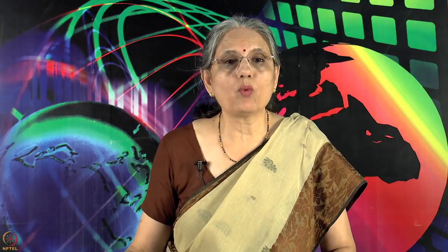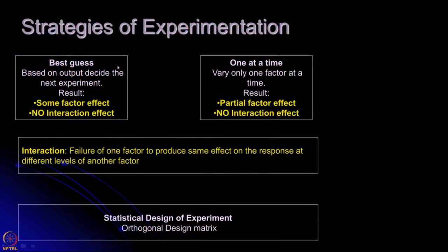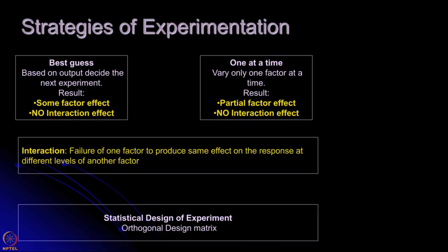So when such a situation arises — when your experiment is generally of this nature — you can apply what is called design of experiment. Design of experiment is a kind of strategy of experimentation. Let us look at different strategies. The one most commonly used is called best guess: based on a specific output you decide what should be your next experiment, with no plan for which experiment comes after the first, and no idea how many experiments you are going to conduct.